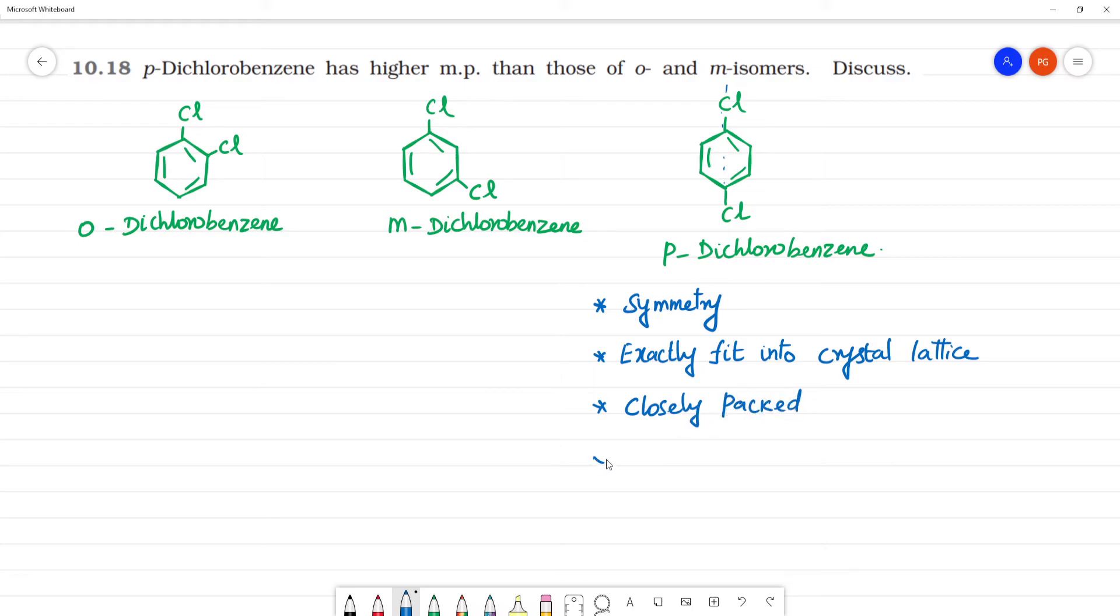Now what happens? We need high amount of energy. Higher energy is needed to break the crystal lattice. Hence they have high melting point.